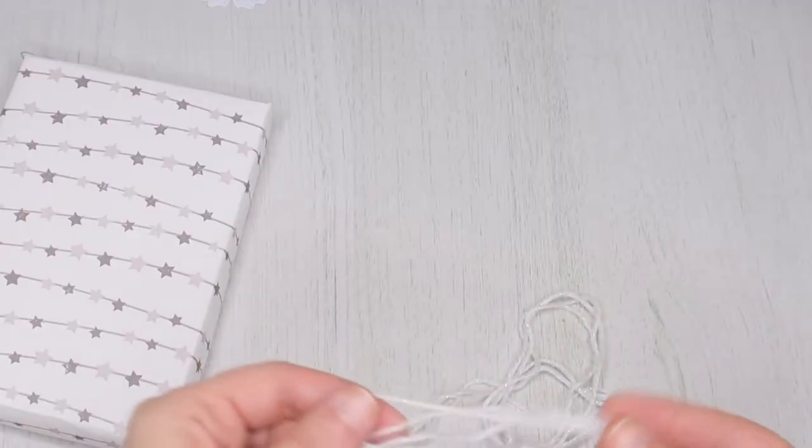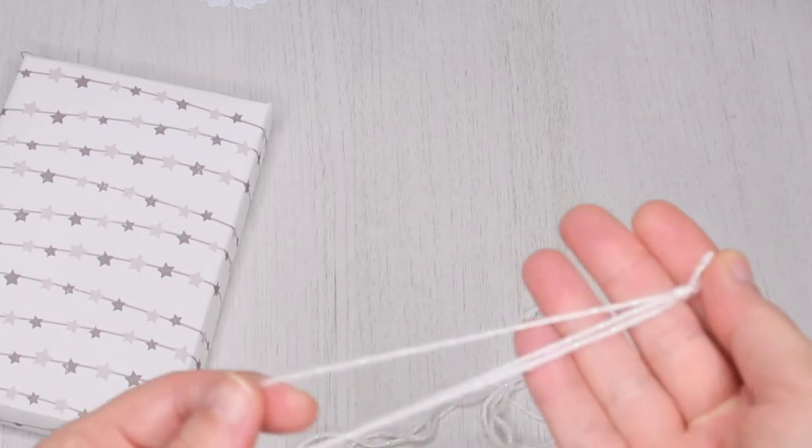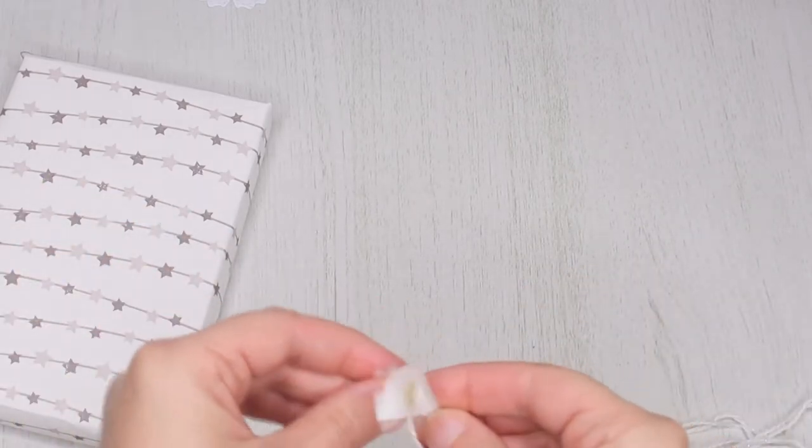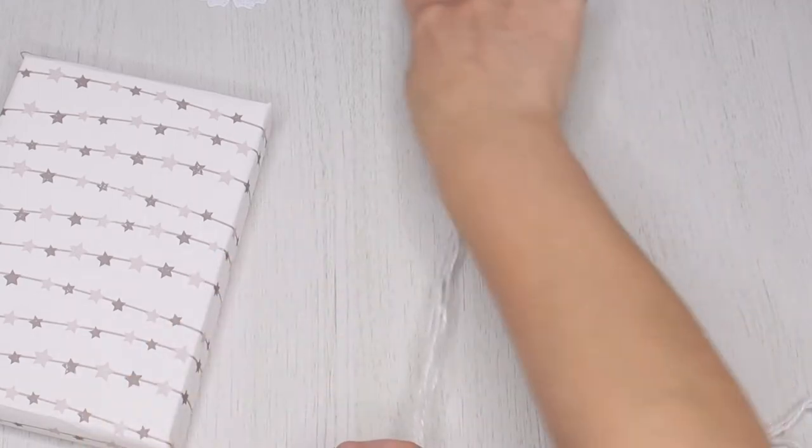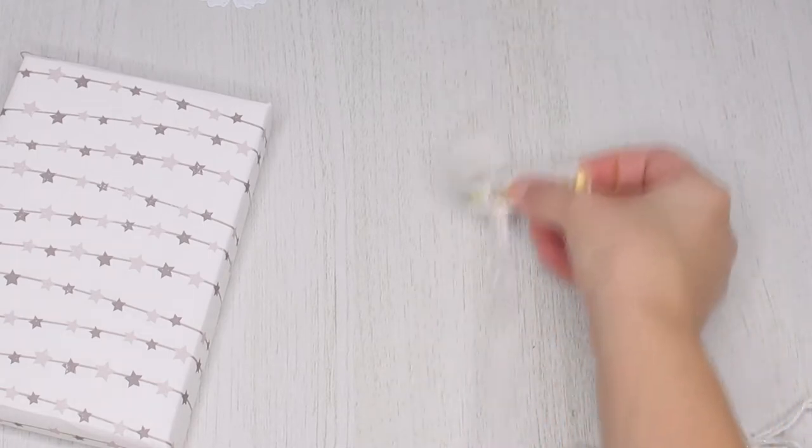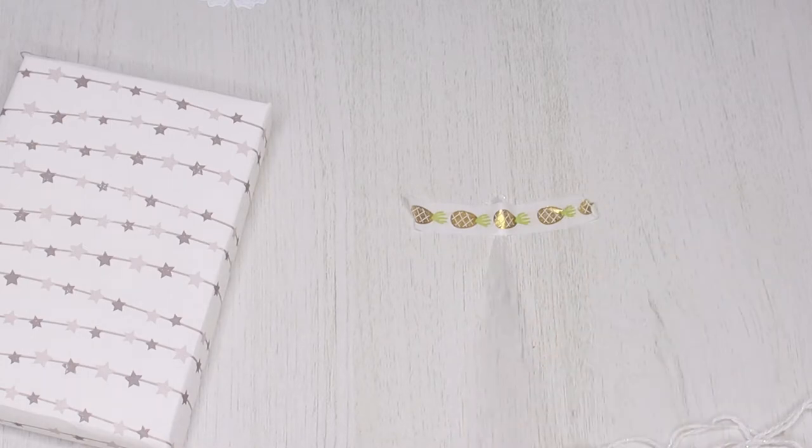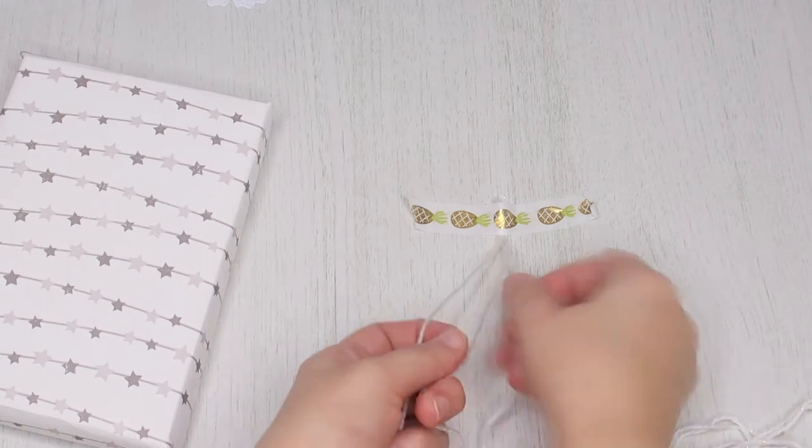First tie a knot on one end to keep all three threads together. Then use a bit of tape to keep it in place while working. Ready, set, go! Let's start braiding!